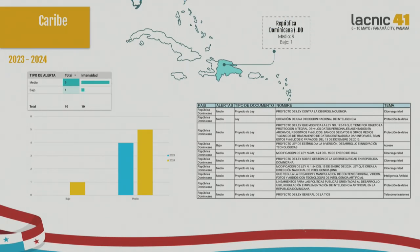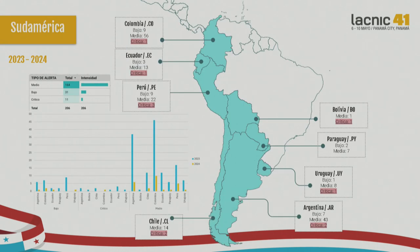In the Caribbean, in the case of Dominican Republic and Trinidad and Tobago, for 2022, 2023, 2024, in Dominican Republic we received 10 alerts between medium and low levels. For South America, which has high activity, we received about 206 initiatives of parliament and regulations that we have identified in this internal process of LACNIC.